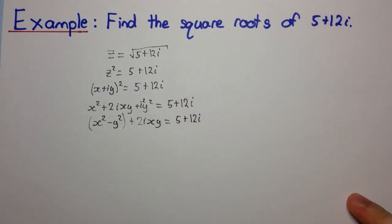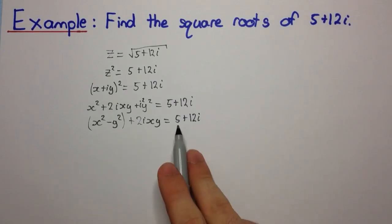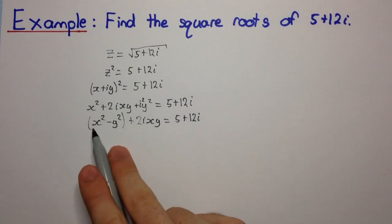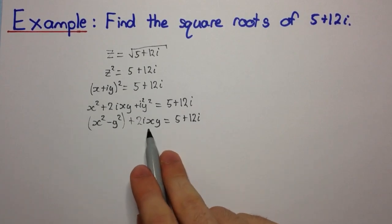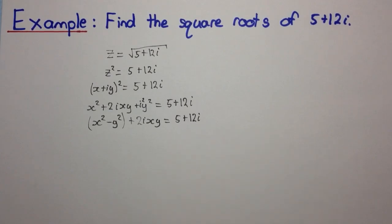Now if you remember back to one of the previous videos, we learned that two complex numbers are equal if and only if their real parts are equal and their imaginary parts are equal. So this complex number here, which is z, is only equal to this part here, if these two conditions hold.